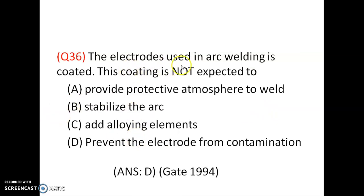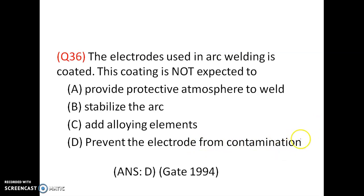The electrodes used in arc welding are coated. This coating is expected to provide a protective atmosphere to the weld, preventing oxidation. It also stabilizes the arc and adds alloying elements to the parent metal. It does not prevent the electrode from contamination — that option is wrong. The first three functions are correct; option D is incorrect.